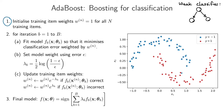Step number one: initialize training item weights W_N equal to 1 for all training items. This just means all your training items are equally important at this point, before we start. So for any training item, say item 25, the weight is set to 1, and all training items get the same weight.